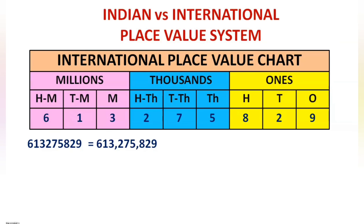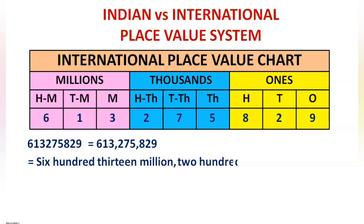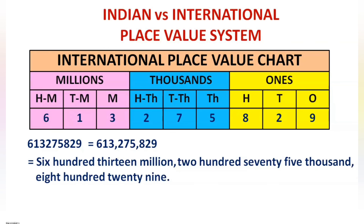Now let us name this number according to periods. 613 is in the millions period, 275 is in the thousands period so it is 275,000, and 829 is in the ones period so it is 829.